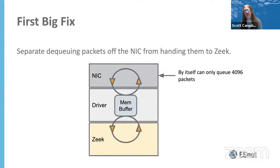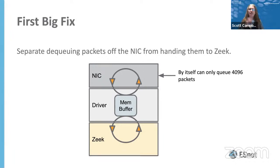The first big fix: we looked at the fact that the NIC only has 4K queues available to handle packets. If you've got a burst of packets, you probably won't be able to offload them off the NIC queue before it gets overrun. So we broke up pulling packets off the queue into a buffer and taking packets from this buffer and handing them off to Zeek separately. That way you have this spongy memory buffer that's a whole lot bigger than 4K that can soak up spikes in traffic. This is a classic design paradigm for dealing with this very problem, and it worked really well.